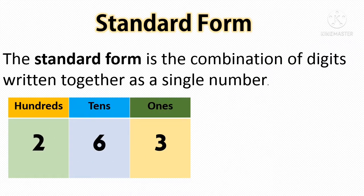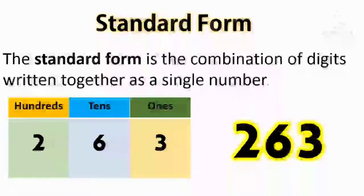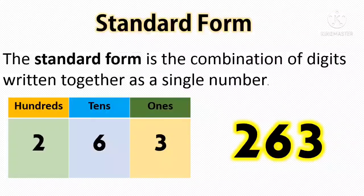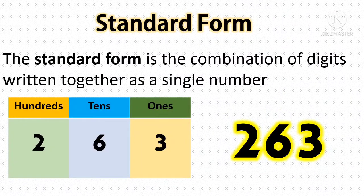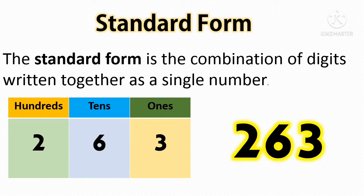Let us look at this place value chart. We have the number 3 at the 1's place, 6 at the 10's place and 2 at the 100's place. How can we write these digits in standard form? 263. This is the normal way of writing a number.